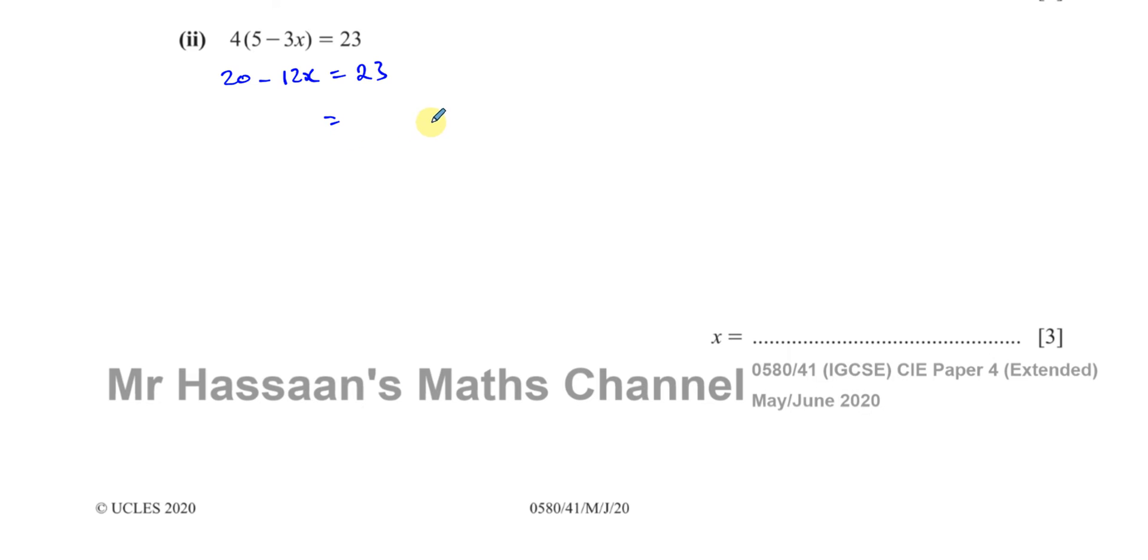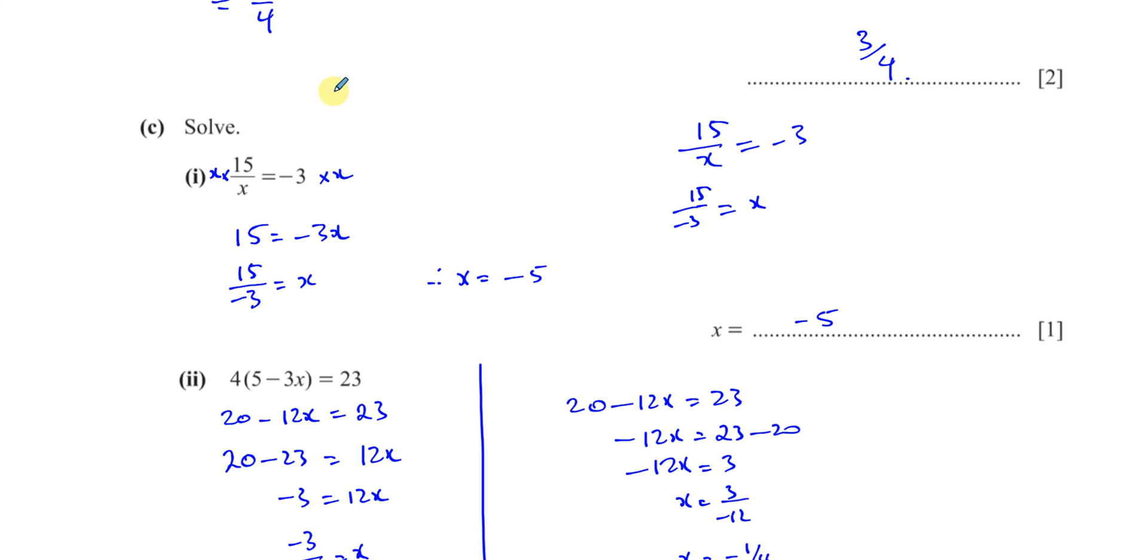So I'll get 20 minus 12X equals 23. Now I want to solve for X. What I like to do is keep the X term positive. So I'll add 12X to both sides and subtract 23 from both sides. I end up with negative 3 equals 12X. I divide both sides by 12, so negative 3 over 12 equals X, so X equals negative 1 quarter. Another way from this stage is we take away 20 from both sides, so 23 minus 20 equals negative 12X, giving us 3 over negative 12, which gives the same answer minus 1 quarter. I like to keep the X term positive.